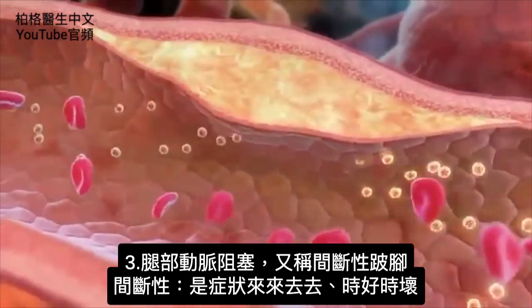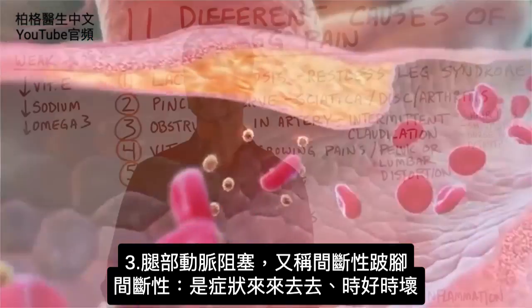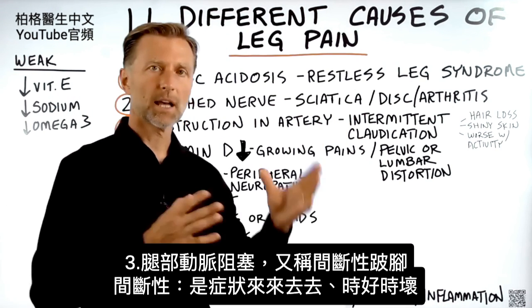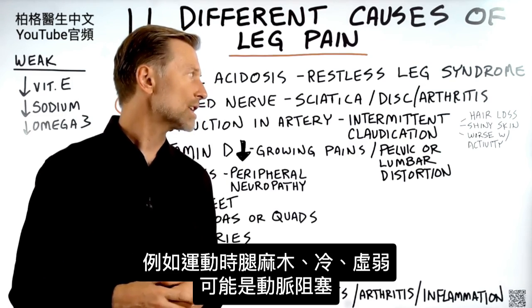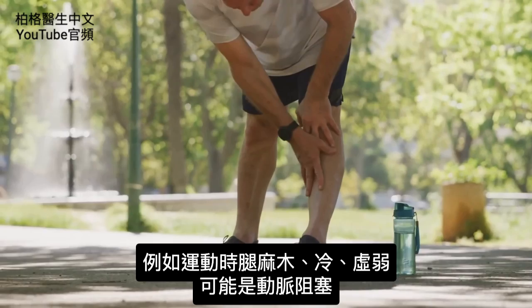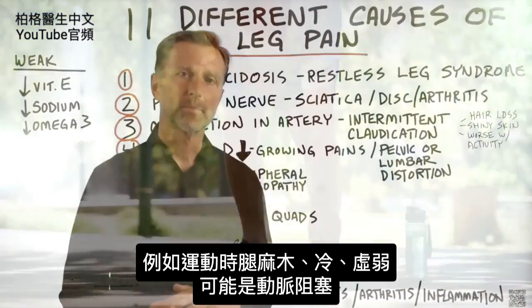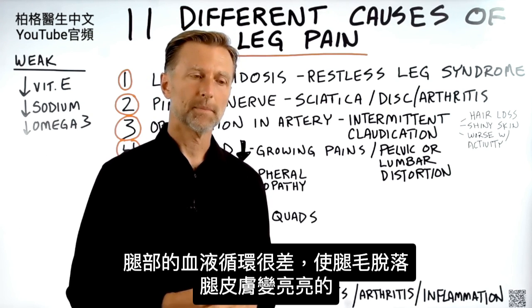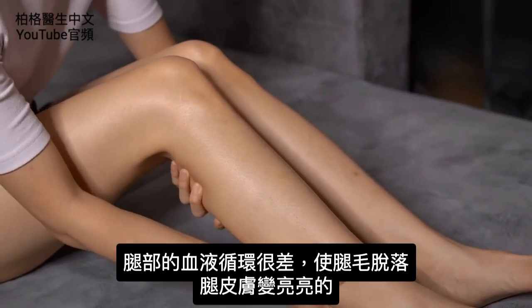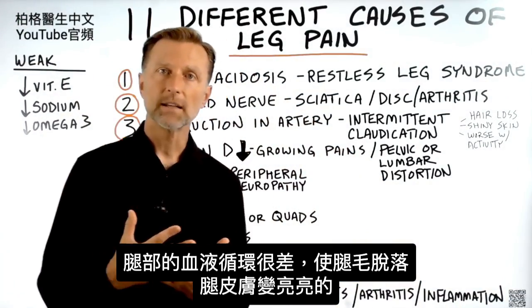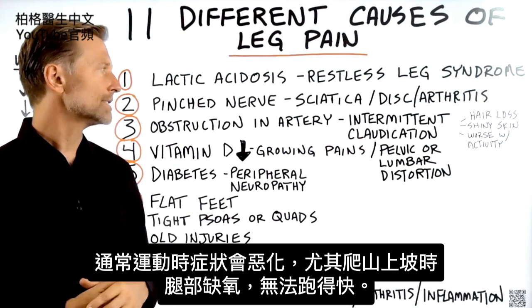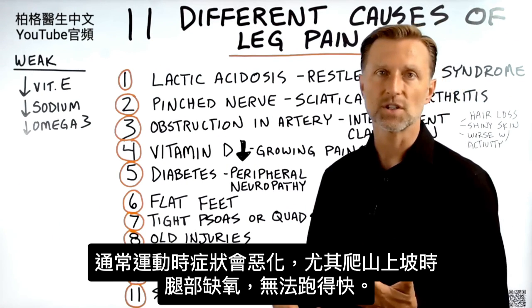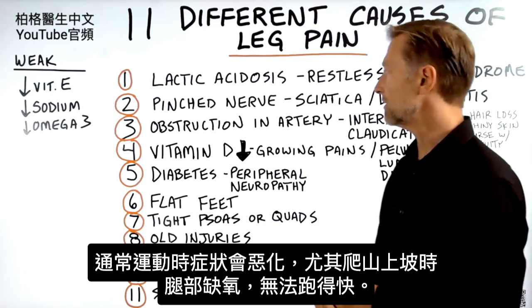Number three: obstruction in your arteries — in the legs. One form of this blockage is called intermittent claudication. Intermittent means it comes and goes. If you start exercising and your legs go numb, get cold, or get weak, that could be from this arterial obstruction. The circulation decreases to the point where you lose hair in your legs and the skin becomes shiny. It's typically worse with activity, especially going up a hill — your legs just don't have the oxygen to move.